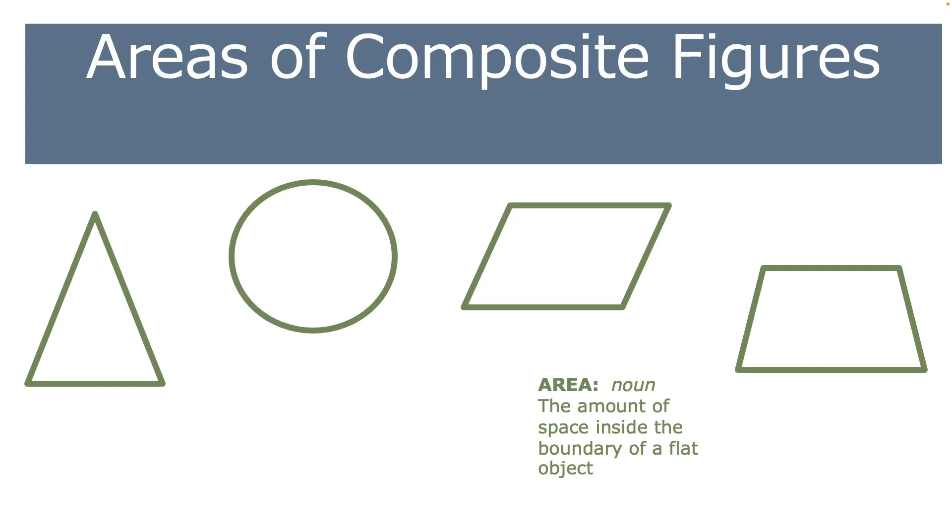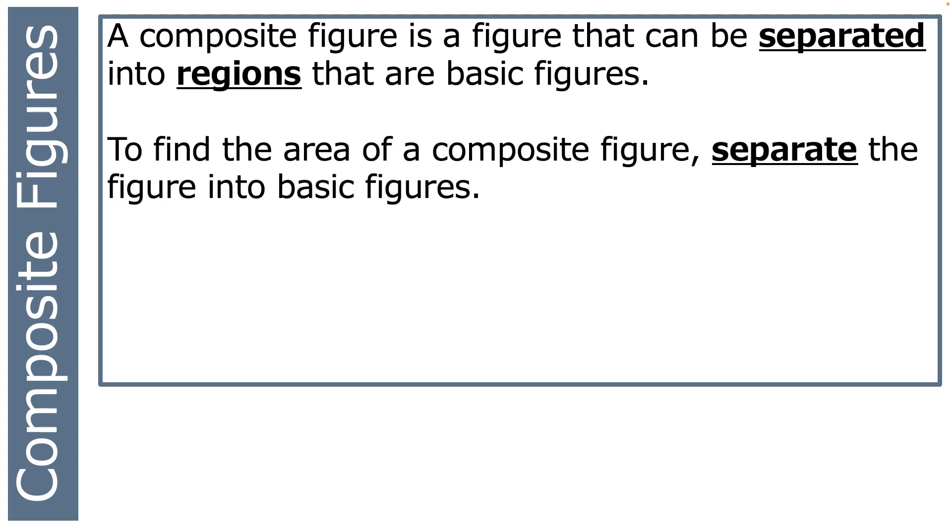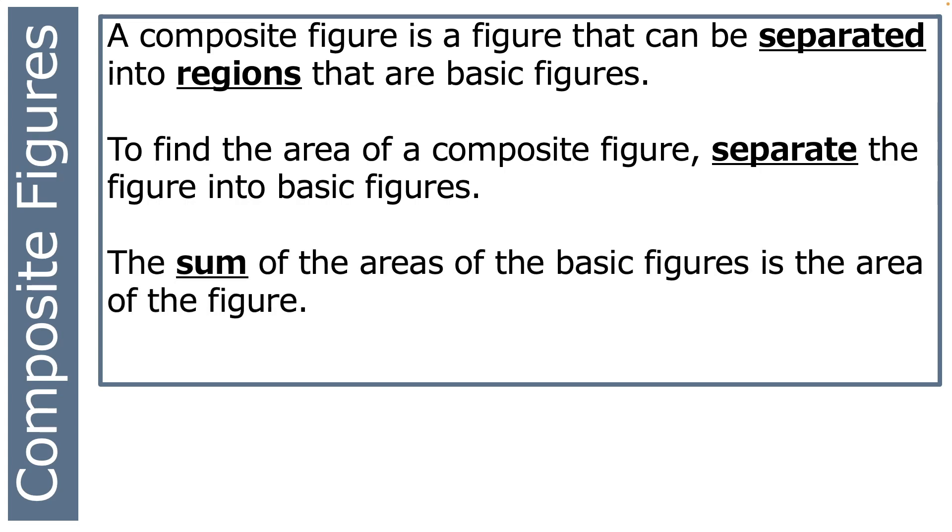Hello and welcome back. Mrs. Saunders here, and we've got two lessons left on our mini unit on area. Today we're talking about areas of composite figures. A composite figure is a figure that can be separated into regions that are basic figures, figures that you already know something about. To find the area of a composite figure, you just have to separate it into basic figures. The sum of the areas of the basic figures is the area of the composite figure.